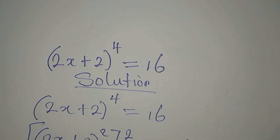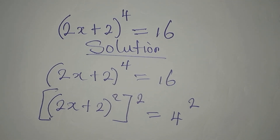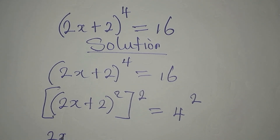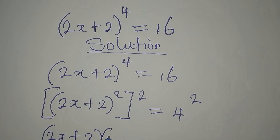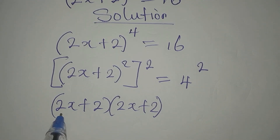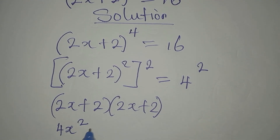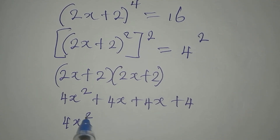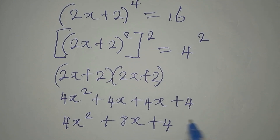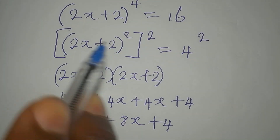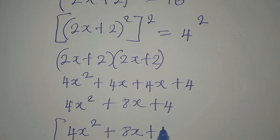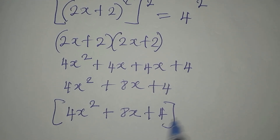On the other side, 16 is 4 to the power of 2. Then we can expand the inside: (2x+2) multiplied by (2x+2). That gives us 2x times 2x which is 4x², plus 2x times 2 which is 4x, plus 2 times 2x which is 4x again, then plus 4. So we have 4x² + 8x + 4 inside the bracket.